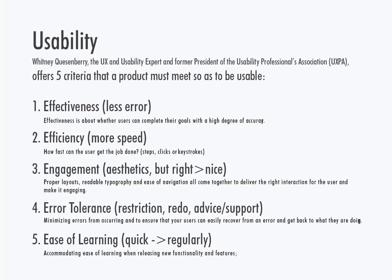Usability offers five criteria that a product must meet in order to be considered usable — it's another checklist. The first is effectiveness: it's about whether users can complete their goals with a high degree of accuracy. The back button should go back, the green button should go forward, and there should be no errors.